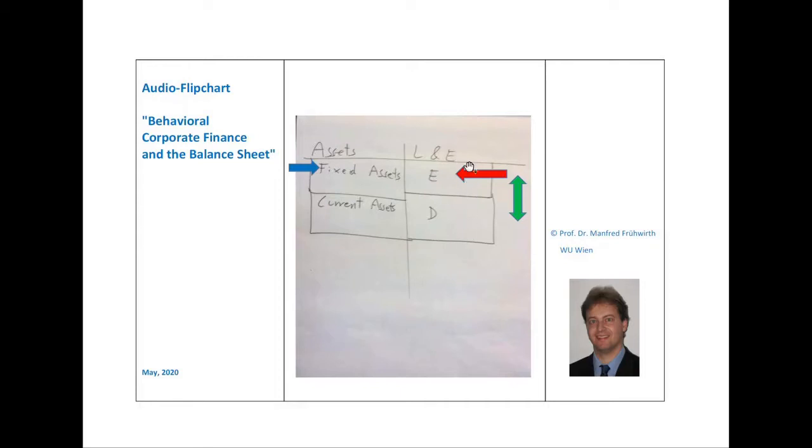On the right hand side, you have the liabilities and equity side. Here, the company collects all the financing instruments used. On this side, you record where the money came from in the past. Usually, these financing instruments are grouped into equity, symbolized by E, versus debt, symbolized by D.